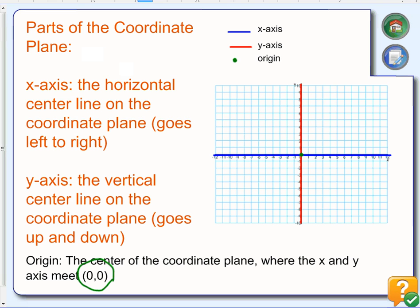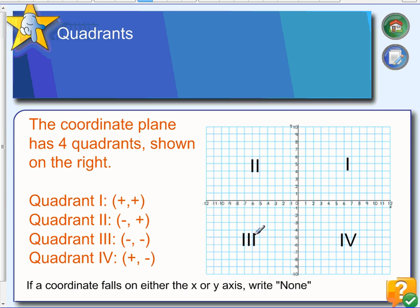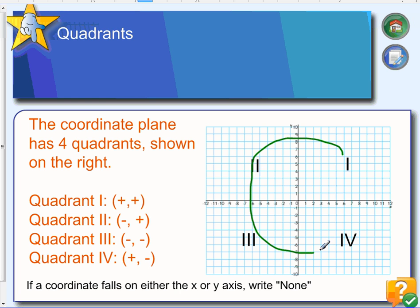The origin can be used as your starting point when you're plotting points. Next, we have what are called quadrants — within every coordinate plane there are four quadrants: Quadrant 1, Quadrant 2, Quadrant 3, and Quadrant 4. In Quadrant 1, x and y are both positive. In Quadrant 2, x is negative and y is positive. In Quadrant 3, both x and y are negative. In Quadrant 4, x is positive and y is negative. A simple way to remember the order of the quadrants is that they make a giant C — you can think 'coordinate C.'